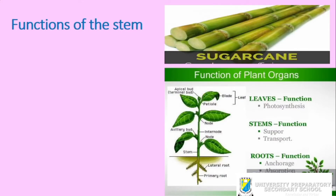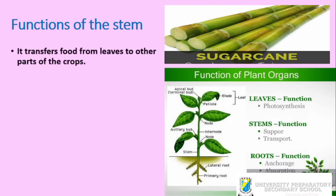There are four major parts of a crop: the roots, the stems, the leaves, and the flower parts. Regarding the functions of the stem — some stems store food in them. A typical example is sugarcane, in which the plant stores food in its stem in the form of sugars for human use.